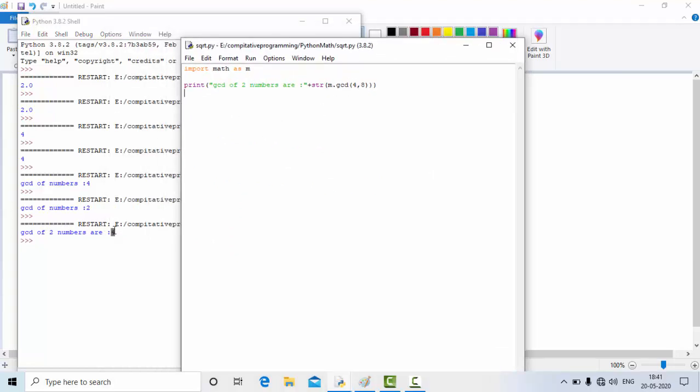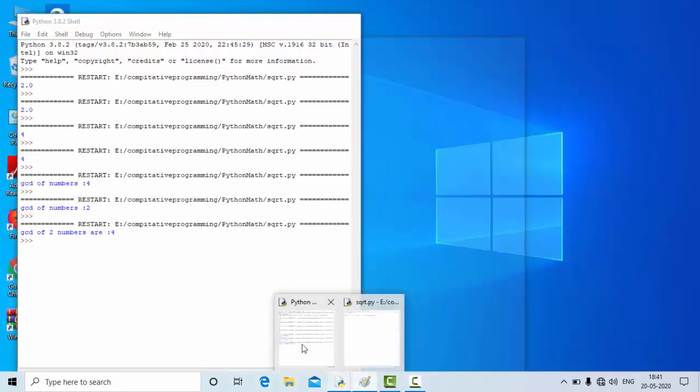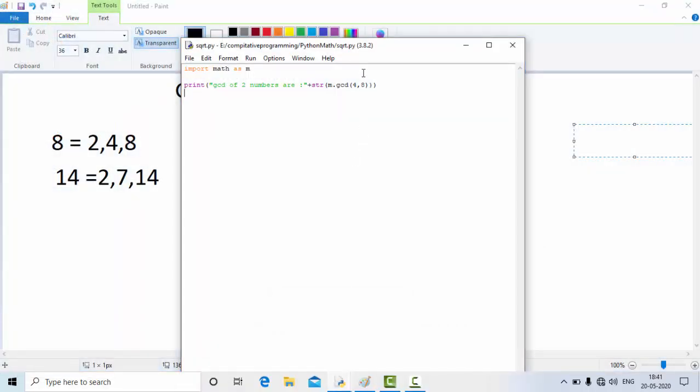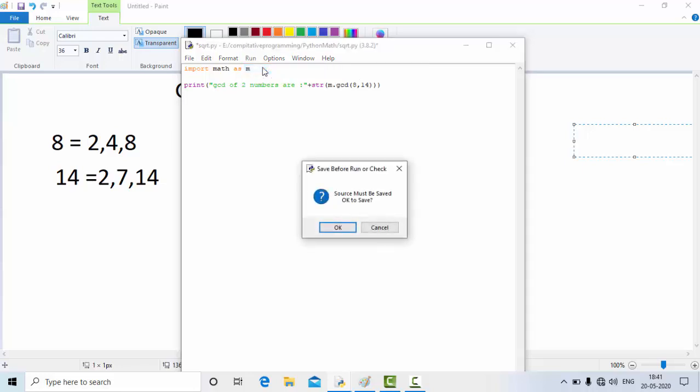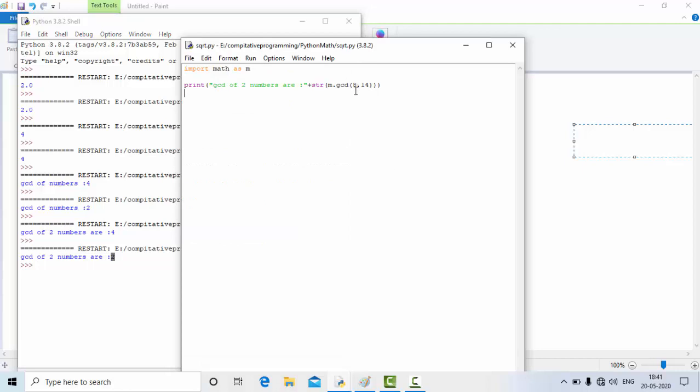As I discussed in this example, in a similar way, let's give 8 and 14 and see. The output should come as 2. Let me give 8 and 14, save and run this, and you can see output as 2.